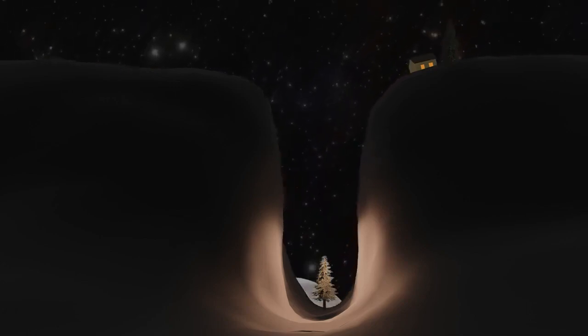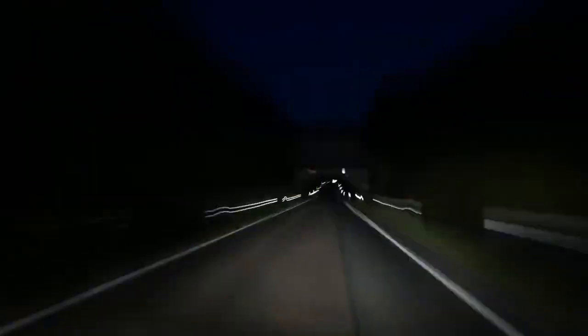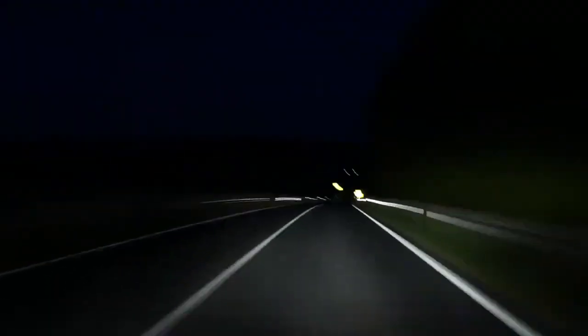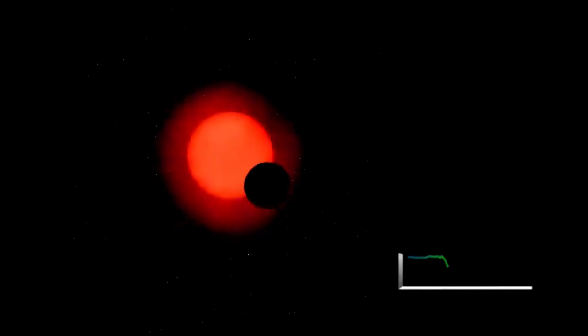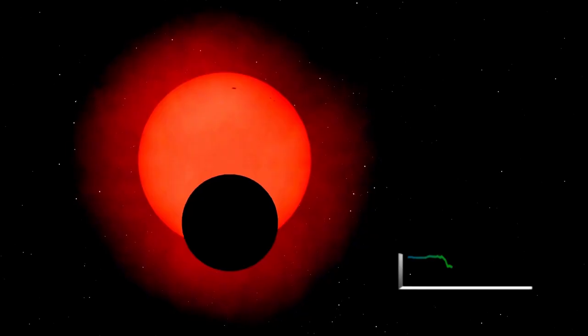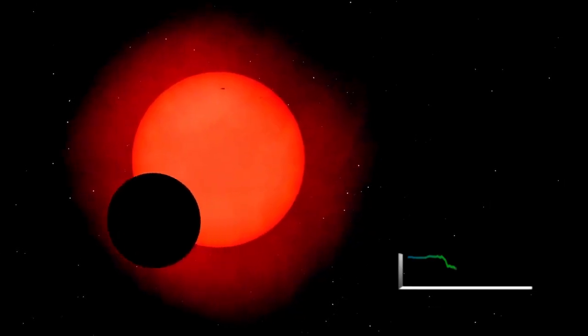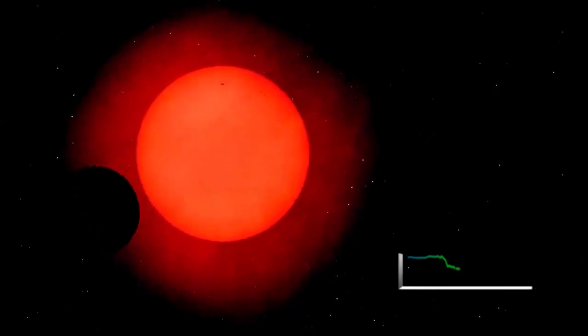Betelgeuse, located more than 640 light-years away from Earth, is a star of staggering proportions that dwarfs our sun in size. Its colossal nature and striking red hue make it a remarkable celestial object, captivating observers for generations. Even at the speed of light, it would take over 640 years to reach Betelgeuse, a journey far beyond the capabilities of current technology.